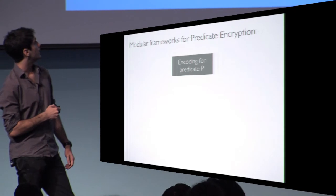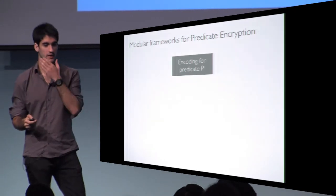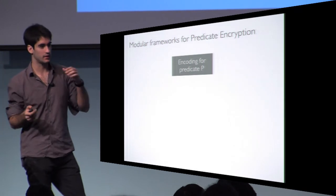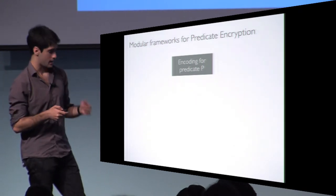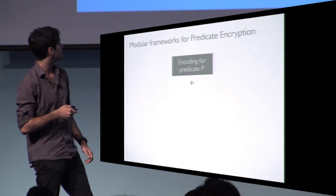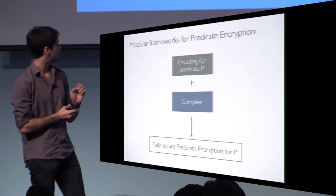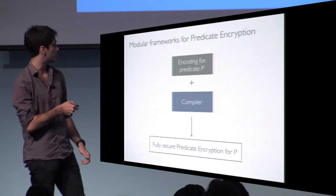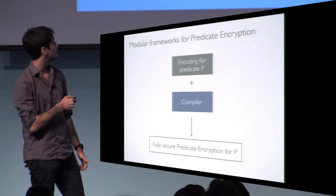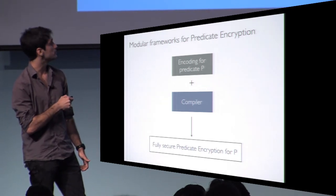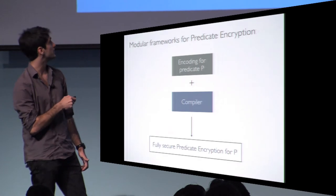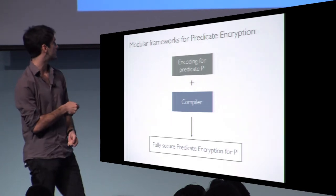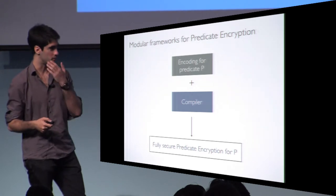These frameworks define a simpler primitive — called predicate encoding in one case and pair encoding in the other. From this primitive, combined with a compiler, they produce a fully secure predicate encryption for predicate P. So if you replace this primitive by another one for a different predicate, you automatically get a fully secure predicate encryption for the new predicate.